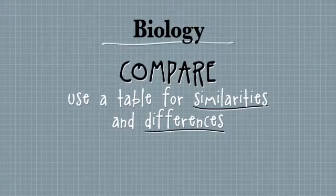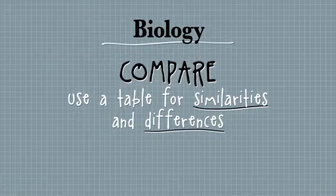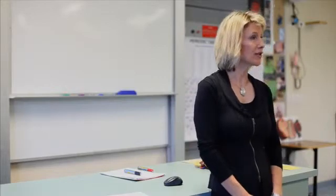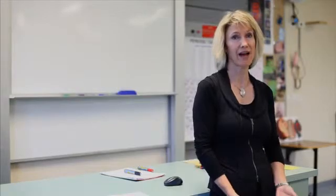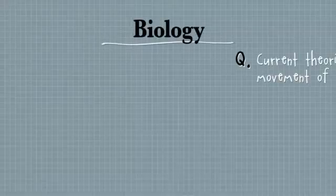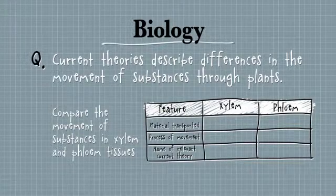Another really common verb you'll find in exams is 'compare.' You're often asked to compare two different things, and the best way to do this is always with a table. If you're asked to compare two things, make three columns; if you're asked to compare five things, make six columns — because the very first column should be the feature or characteristic you're going to compare. Remember it can be similarities as well as differences.